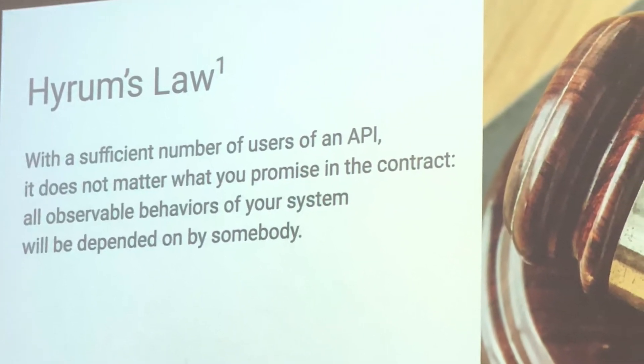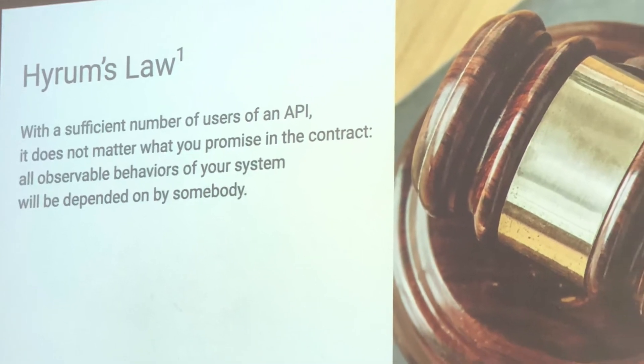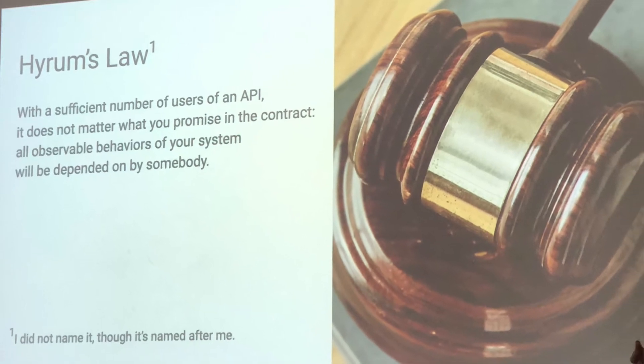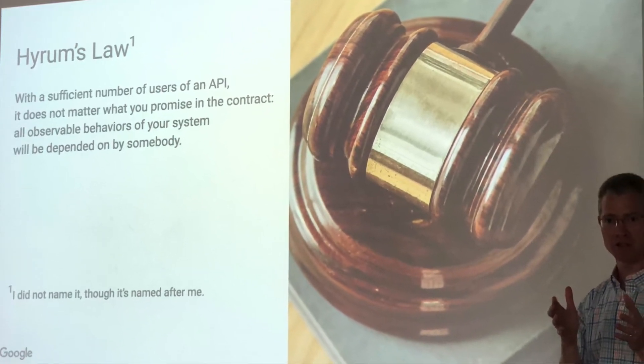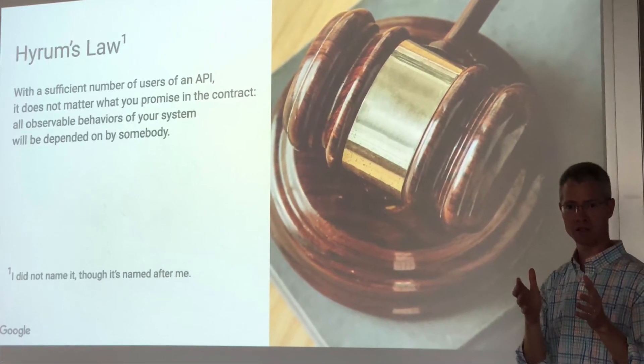Hyrum's Law is named after Hyrum Wright, a software developer at Google. What he said is that any observable behavior of a software component will be depended upon eventually. So for example, let's say you always return a list of names ordered in your API — that's not something you've promised, it's just what your implementation does. Over time some people will assume it's ordered, meaning that if you change the API and it no longer returns ordered results, somebody's code will break, even though you never said it would be ordered.